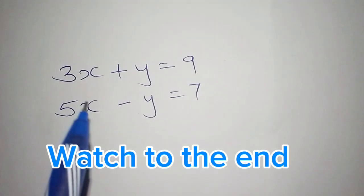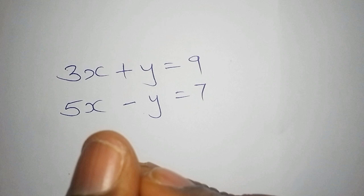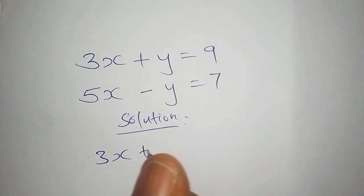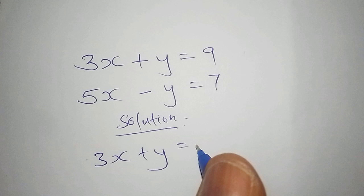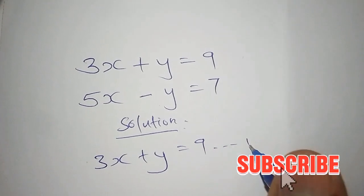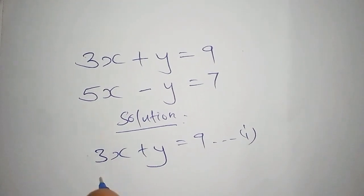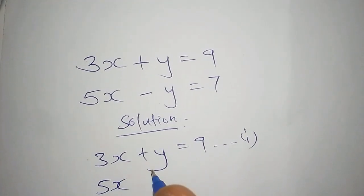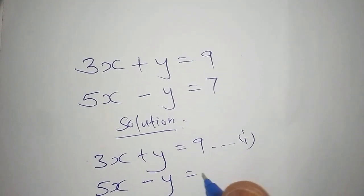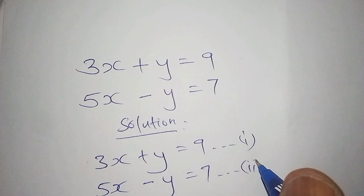Hello everyone. I want us to work out this math problem. Let us begin with the solution of 3x plus y equals 9 — we shall treat that as equation 1. Then we have 5x minus y equals 7 — we shall treat that as equation 2.